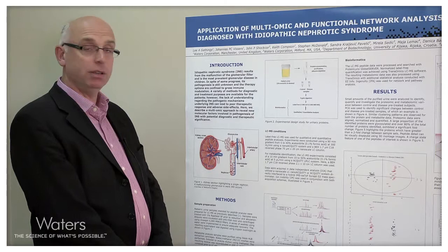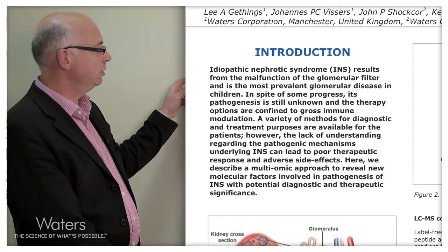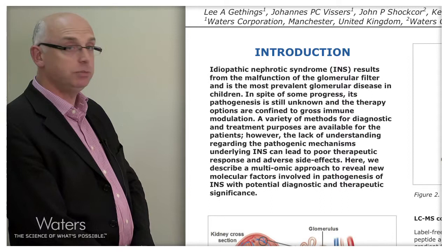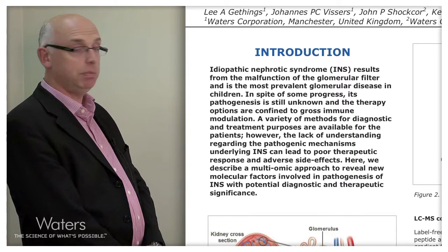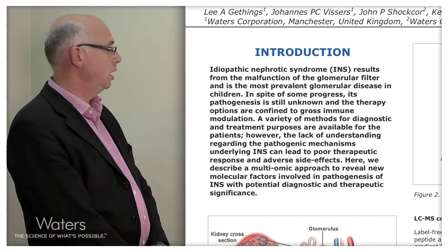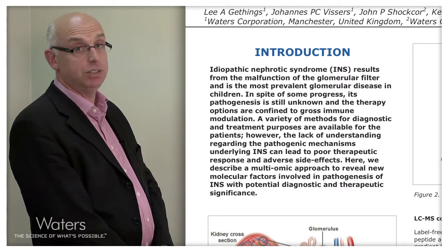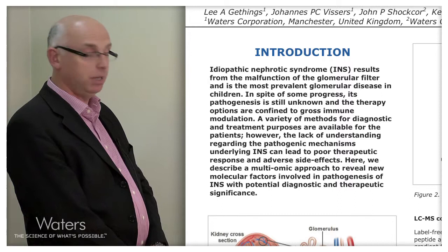Idiopathic nephrotic syndrome results from the malfunction of the glomerular filter and is the most prevalent kidney disease in children. And in spite of some of the progress, its pathogenesis is still unknown and therapy intervention in this disease is really confined to gross immune modulation of the patient. Therefore, despite the fact there's a variety of methods for diagnostic and treatment purposes, there's a fundamental lack of understanding of the biology and the pathogenic mechanisms underlying this disease.